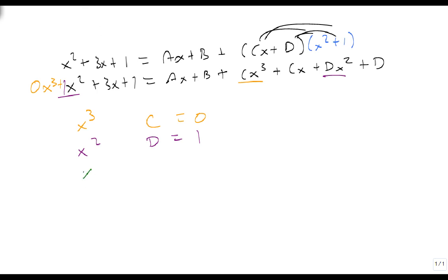For my x's, I'm going to get Ax and Cx, so A plus C equals 3. And for our constants, I'm going to get B plus D equals 1.